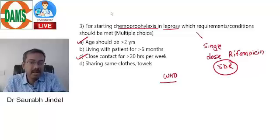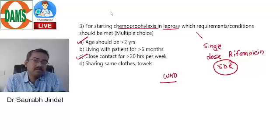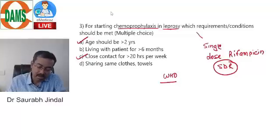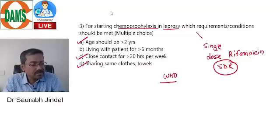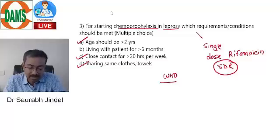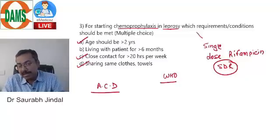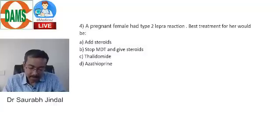For example, if a driver spends about three hours a day ferrying a leprosy patient six days a week, that totals roughly 20 hours — making them eligible. Sharing personal clothing or towels is also considered a transmission route, though not firmly proven. Therefore, age >2 years, contact duration, and shared clothing all qualify as criteria — these contacts should receive single dose rifampicin.